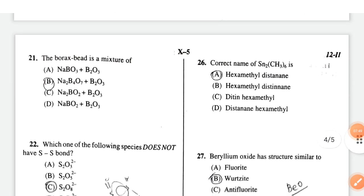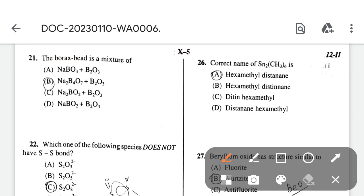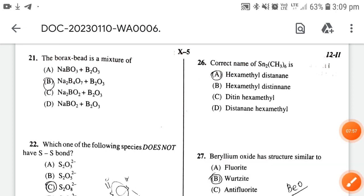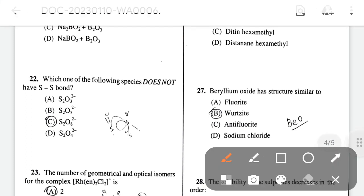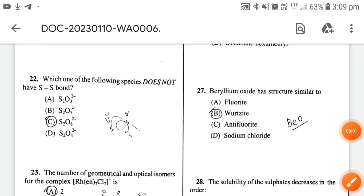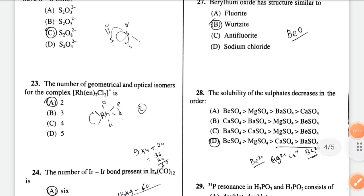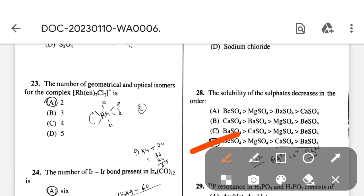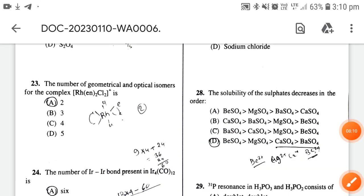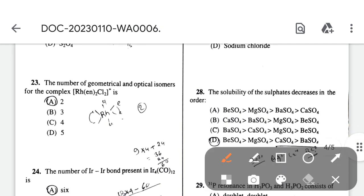Question 26: correct name of Sn₂(CH₃)₆ is hexamethyldistannane. Beryllium oxide has a structure similar to wurtzite. The solubility of sulfates decreases in the order: the correct option is beryllium sulfate - calcium sulfate and BaSO₄ are almost insoluble in water.